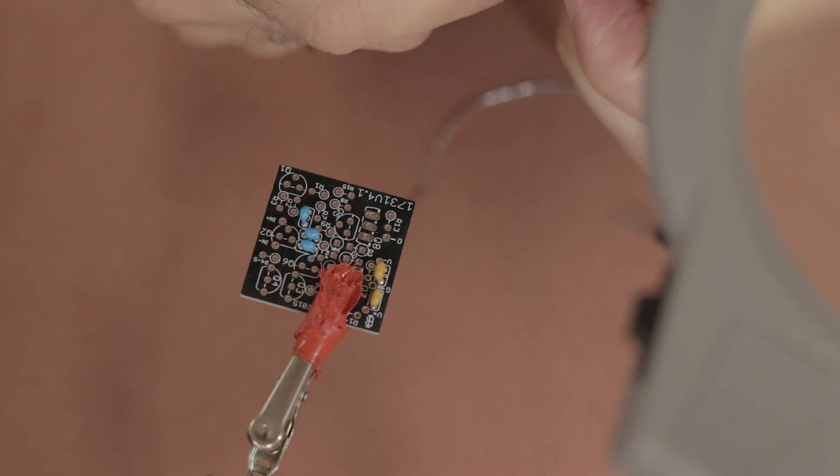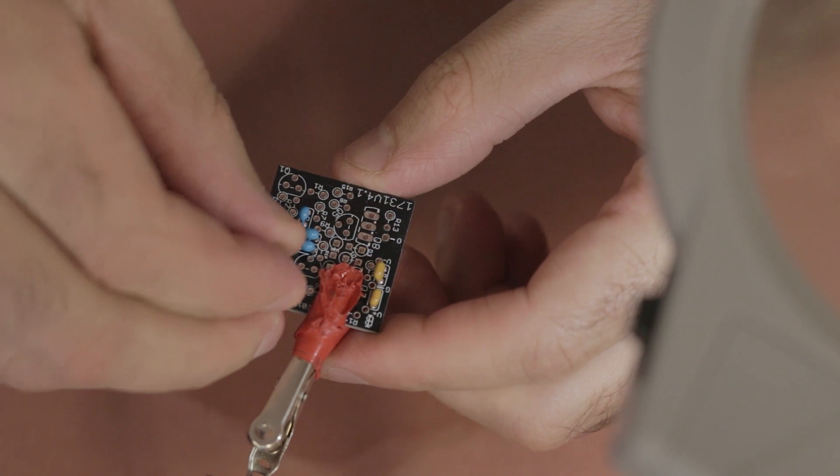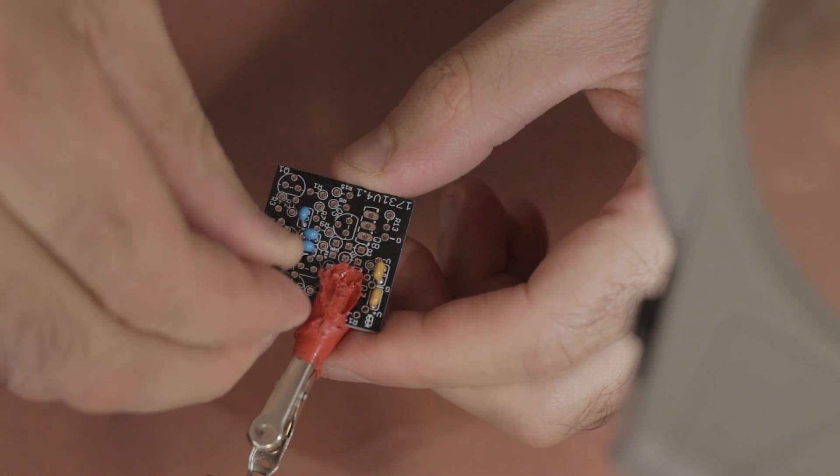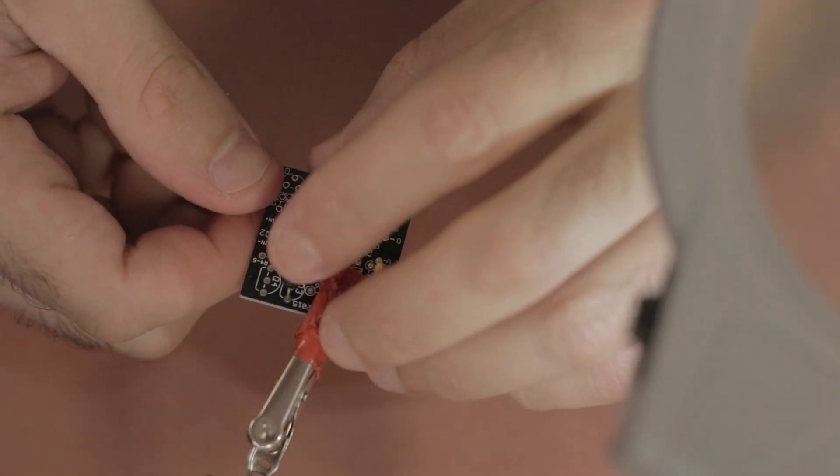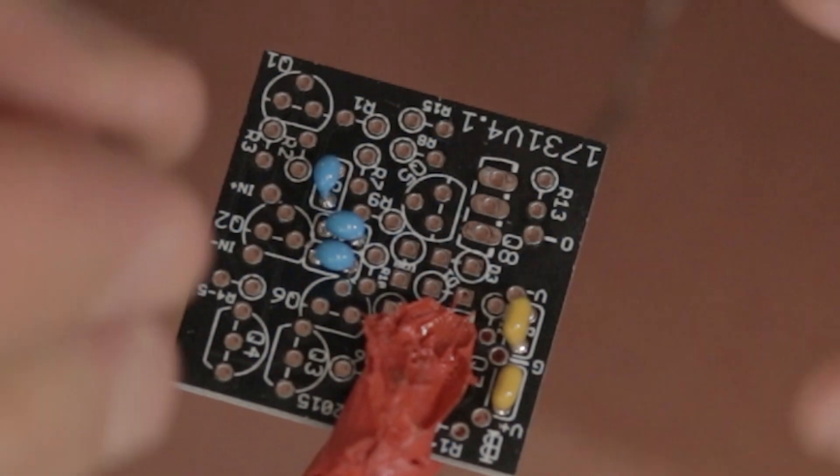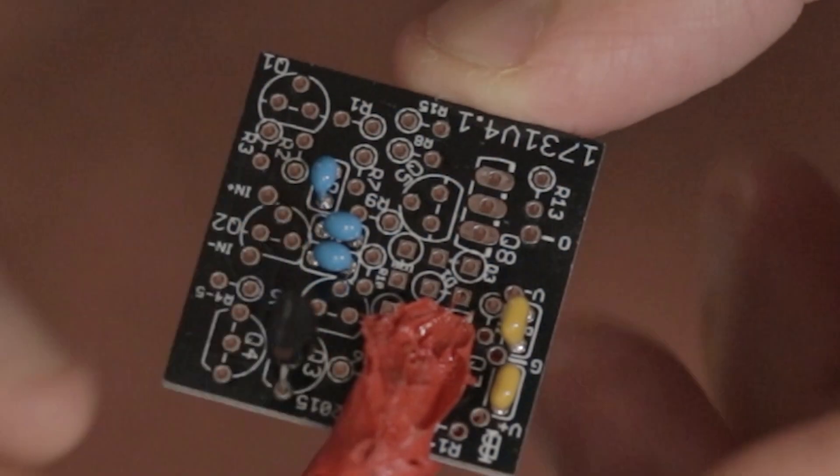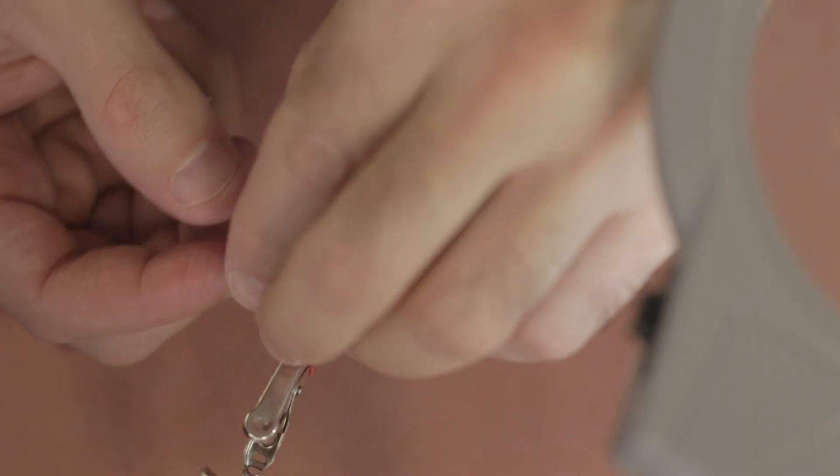And then you want to grab the transistor bag that has Q3 and Q4 with the transistors BC560C, and make sure when you're soldering these transistors in that they match up with the semicircle line on the semicircle part of the actual transistor. It's really crucial to orientate these correctly.